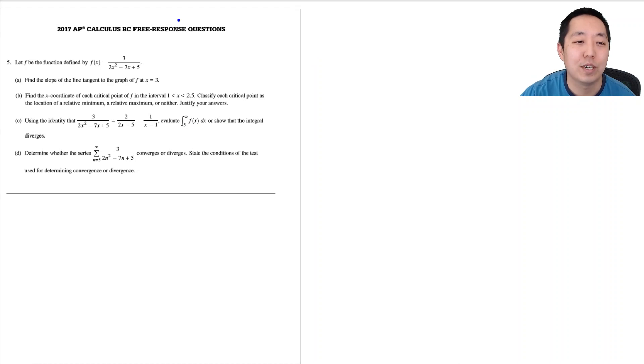Hi all, this is Alan with Bothell STEM Coach and today we're continuing on with the AP Calculus BC 2017 free response questions. We'll look at number 5 here. Let f be the function defined by f(x) equals this. Find the slope of the tangent line to the graph at x equals 3.